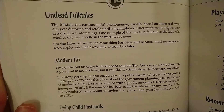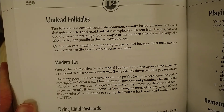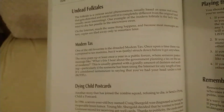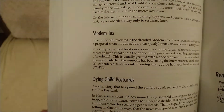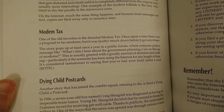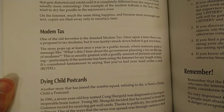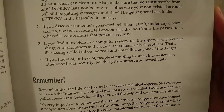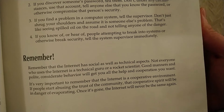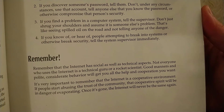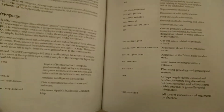One example of a modern folktale is a lady who tried to dry her poodle in a microwave oven — messages like this spread on the internet because copies are filed away and then resurface later. This is just a bunch of old-school Onion-style articles, like 'modem tax' — a proposal to tax modems that pops up like once a year in a public forum. Other netiquette points: if you find a problem in a computer system, tell the supervisor. The internet is a cooperative environment — if people start abusing the trust of the community, that cooperative spirit will be in danger of evaporating.